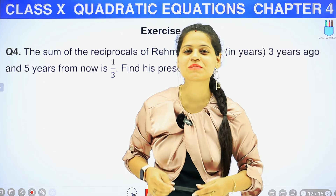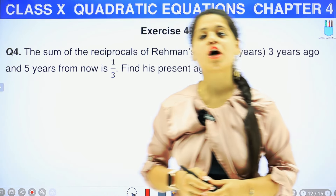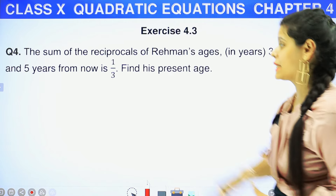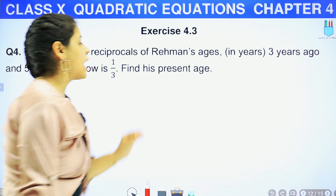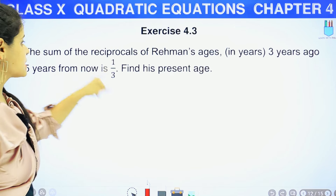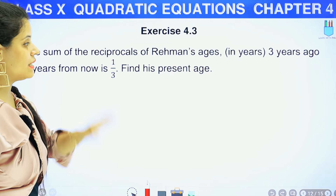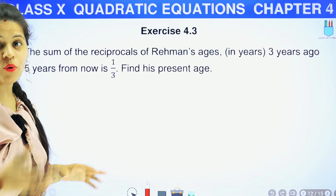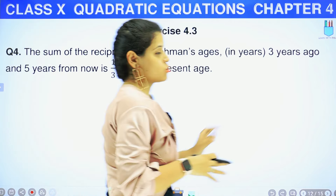Hello my lovely children, this is Manasi. Welcome back to the channel. So now we are on the fourth question of exercise 4.3. The question says: the sum of the reciprocals of Rehman's age in years, 3 years ago and 5 years from now, is 1 upon 3. Find his present age.